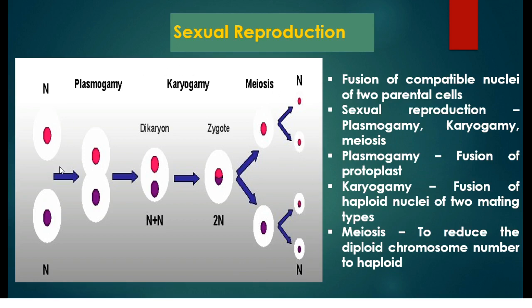This is different from other eukaryotic organisms. In other eukaryotes, meiosis takes place prior to plasmogamy and karyogamy, because their chromosome number is diploid. So before the formation of the sex cell, the chromosome number has to be reduced to haploid.